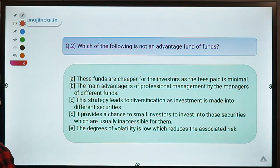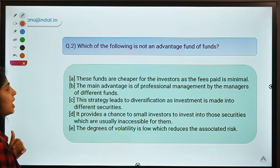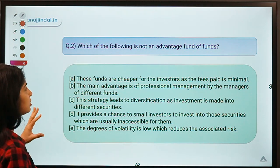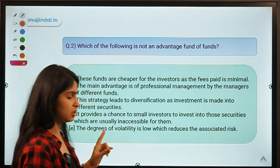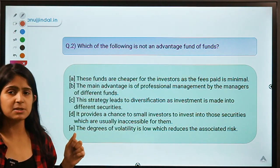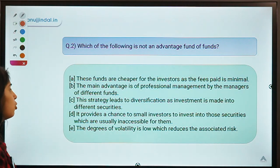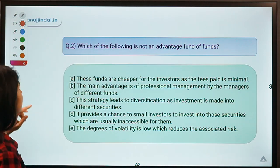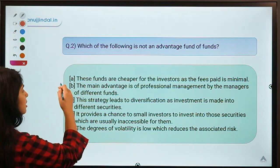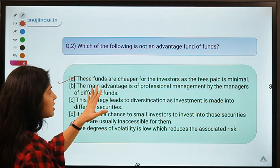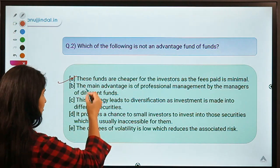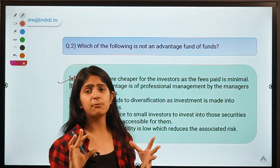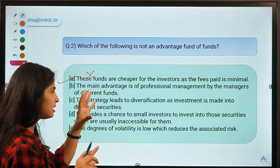Question number two: Which of the following is NOT an advantage of Fund of Funds? Five statements are given and you have to identify the one that is not an advantage. The correct option is option A — 'these funds are cheaper for the investors as fees paid is minimal' — this is NOT an advantage.